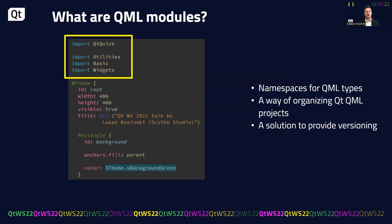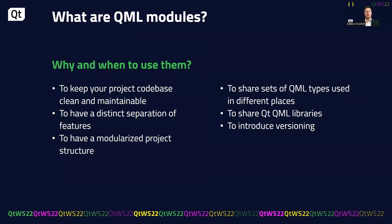Even if you are new to Qt, you use QML modules every day by importing modules shipped with the Qt framework, like Qt Quick or Qt Quick Controls. Modules are like namespaces for groups of QML items — like packages or libraries that you may want to use to better organize your project. With a module you can simply import all of the types and use them in another place. You can also use versioning; in Qt 6 versioning is not as common as in Qt 5, but you may still want to have modules of different versions. Use QML modules to keep your project codebase clean and maintainable.